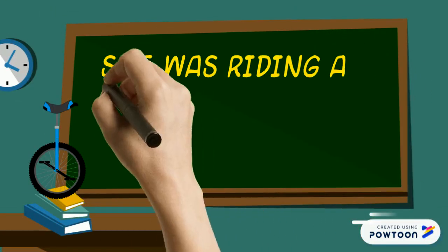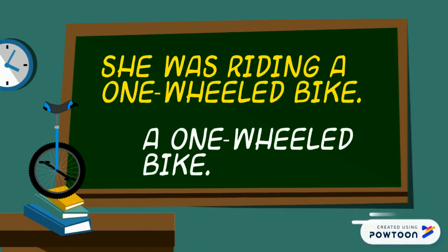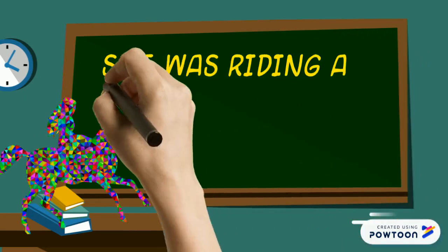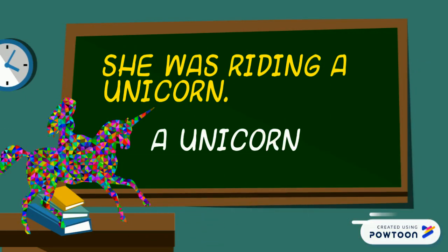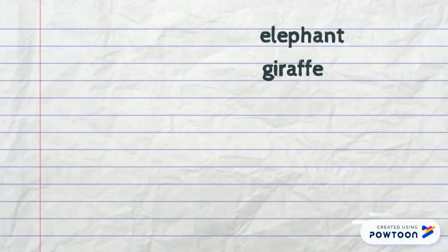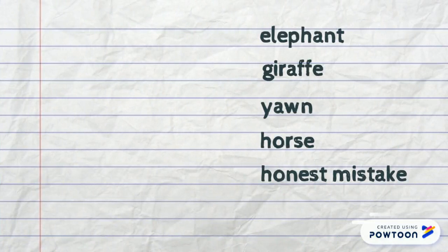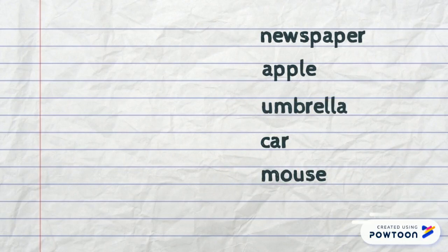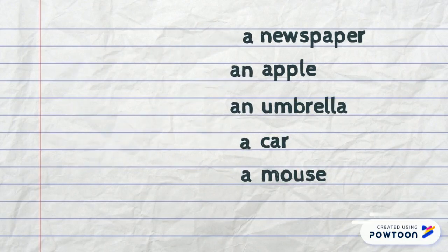She was riding a one-wheeled bike. She was riding a unicorn. An elephant. A giraffe. A yawn. A horse. An honest mistake. A newspaper. An apple. An umbrella. A car. A mouse.